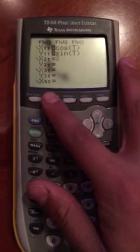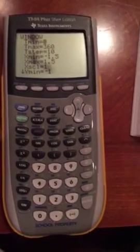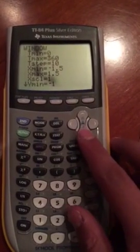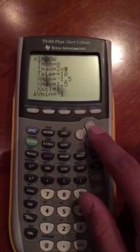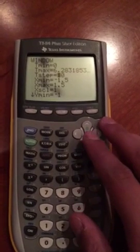Now we need to change the window so you can see the unit circle correctly. So your tmin, you're going to have 0, and your tmax, you're going to have 2 pi, because 360 degrees is 2 pi.